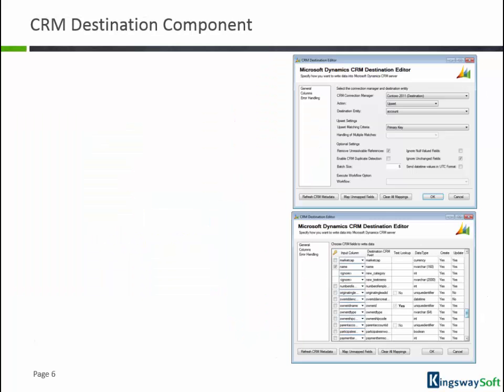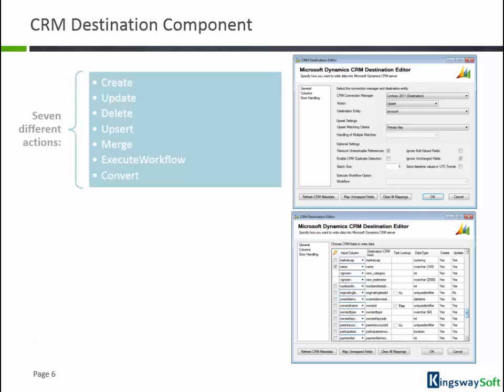Our destination component includes many features that help improve your ETL development and productivity. For example, we offer seven different write actions. The integration toolkit also offers a unique upsert functionality that provides a robust solution to manage incremental changes. In the upsert functionality, we support three different matching options, including primary key, CRM duplicate detection, and manually specified fields.